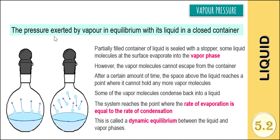Vapor pressure is the pressure exerted by vapor in equilibrium with its liquid in a closed container. A partially filled container of a liquid is sealed with a stopper. Some of the liquid molecules at the surface will evaporate into the vapor phase.